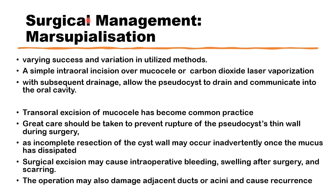Surgical management remains the most common way of treating oral mucoceles. It can be as simple as marsupialization of the cyst, which can be done by a simple intraoral incision over the dome of the mucocele, or lasers can be used to vaporize the dome. This is followed by drainage of the cyst into the oral cavity, allowing the pseudocyst to drain directly. However, marsupialization has a high recurrence rate.